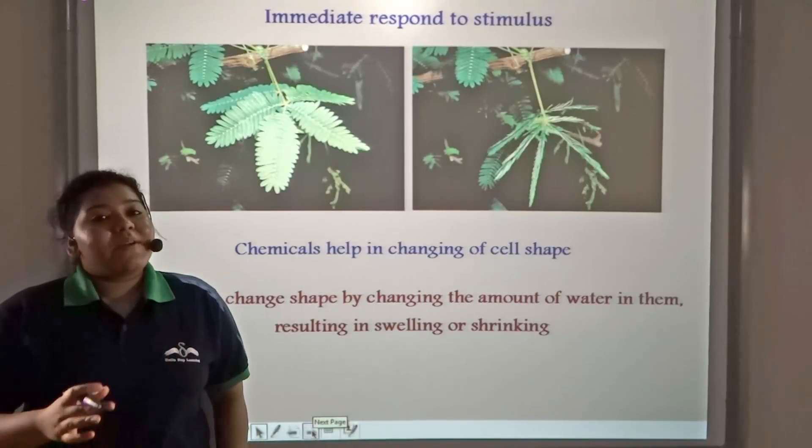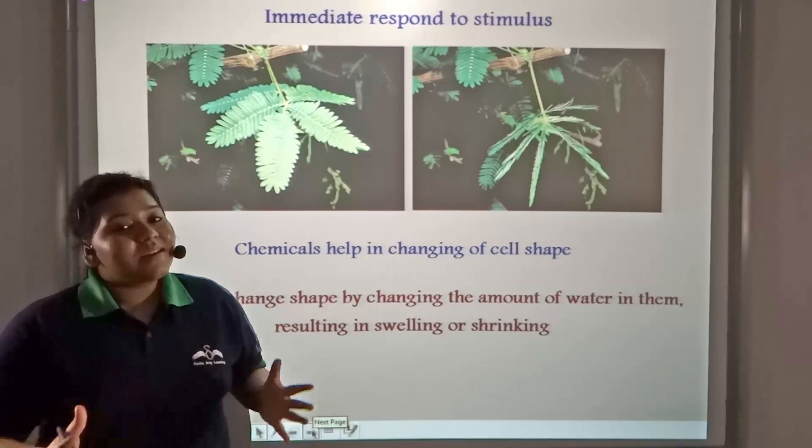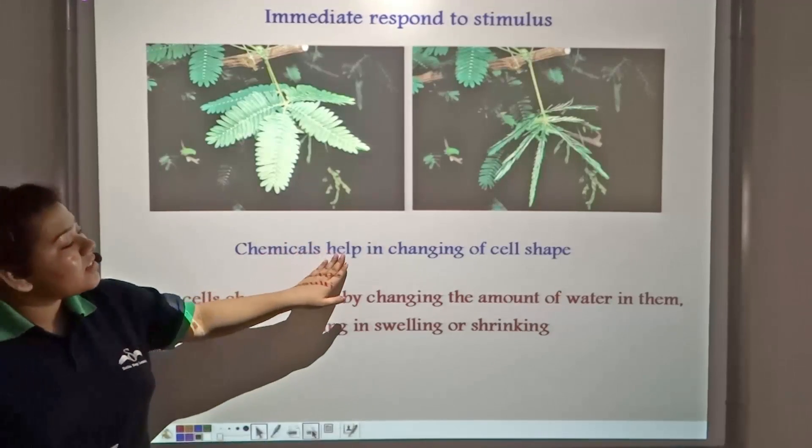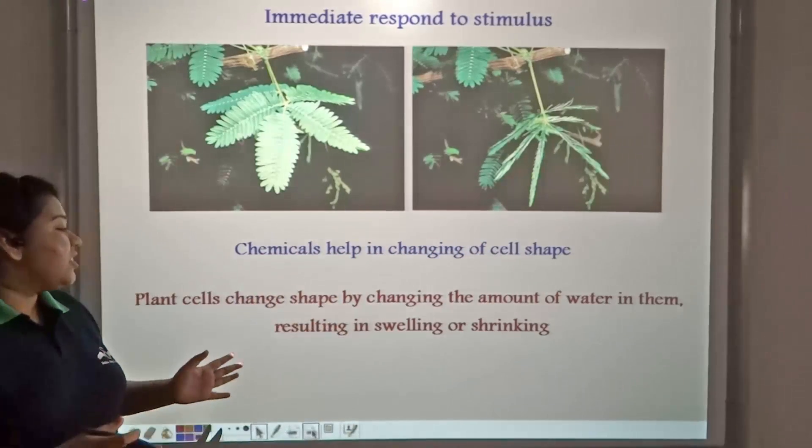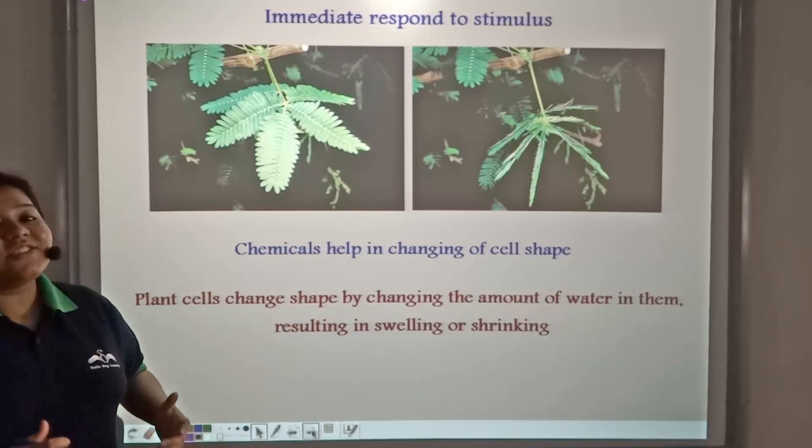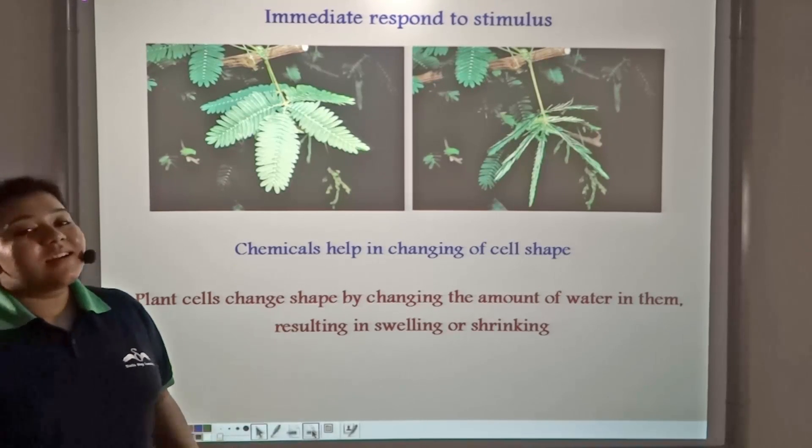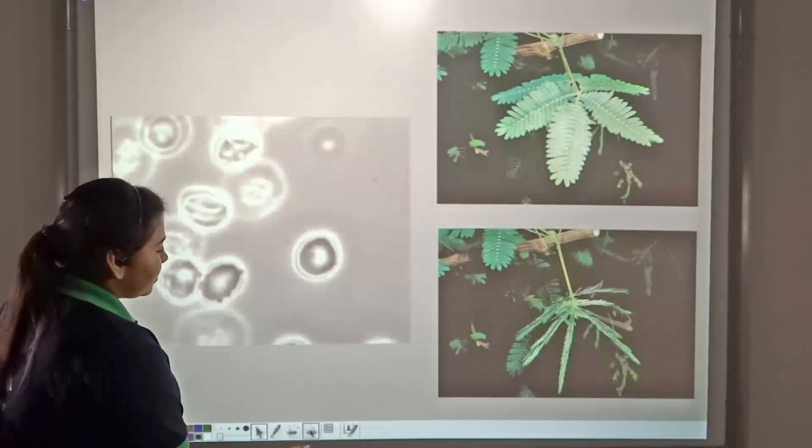Well, when we touch the leaves of Mimosa pudica, a chemical is secreted in the tissue space that changes the cell shape. The cell shape changes by changing the amount of water present in it, resulting in swelling or shrinking.